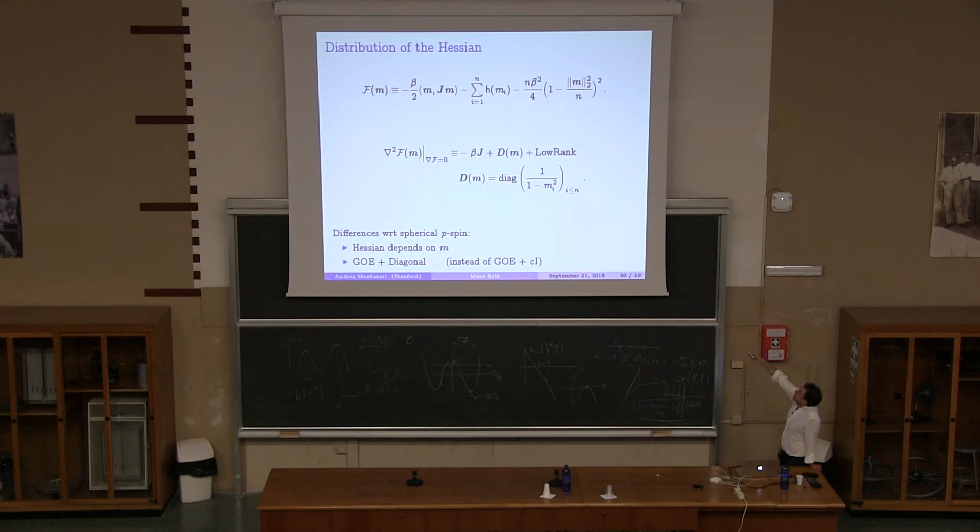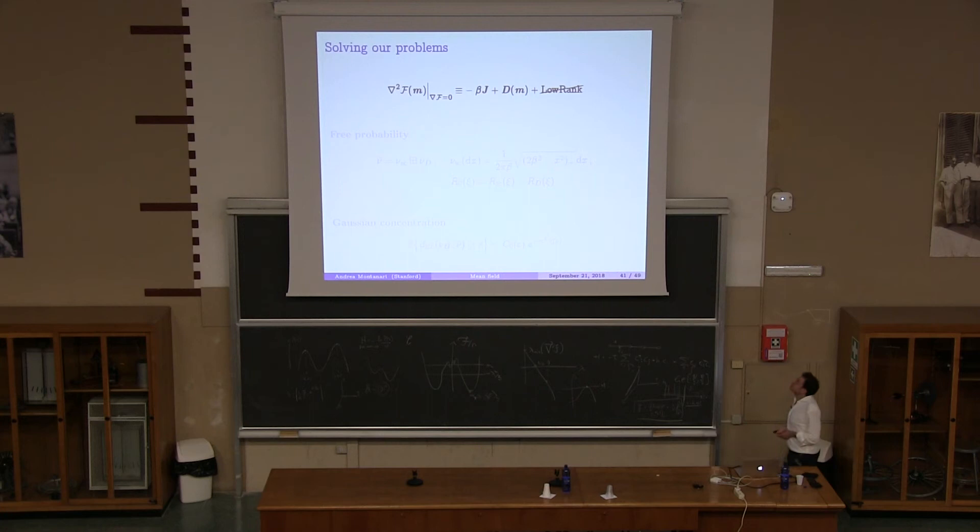Let's look at what is the Hessian? Well, the Hessian is J plus basically a lower rank part that comes from here that is not really important. And then there is a diagonal part that is the derivative of the Hessian of this, which is diagonal. And notice that this is very different from what happens on spherical P-spin. First of all, the Hessian depends on M. In spherical P-spin, the Hessian only depends on Q. And this is so much nicer. And second, this is a messier random matrix. In the P-spin model, that is just a GOE matrix plus the identity, here is a GOE matrix plus a diagonal matrix. So that's a pain.